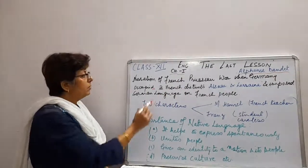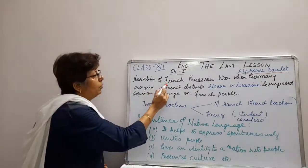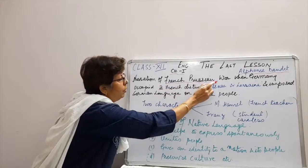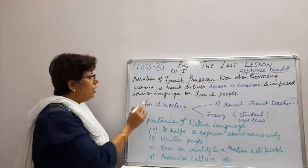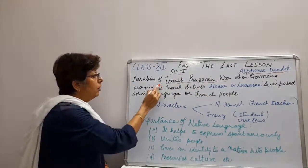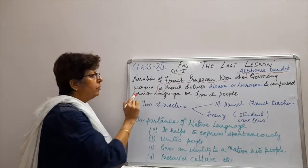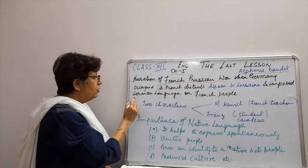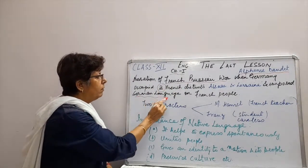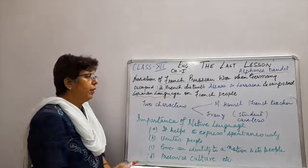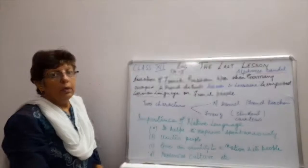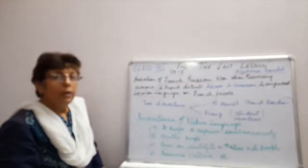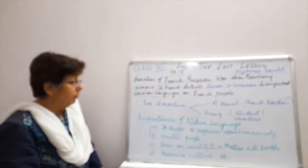This chapter is about the narration of the French-Prussian War, when Germany occupied two French districts, Alsace and Lorraine, and imposed the German language on the French people. This chapter discusses the importance of native language.